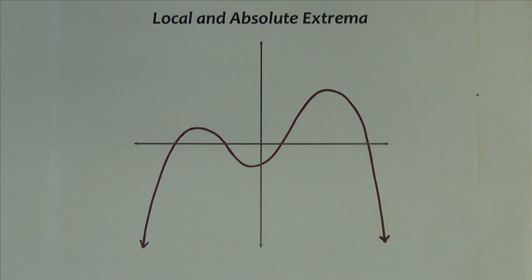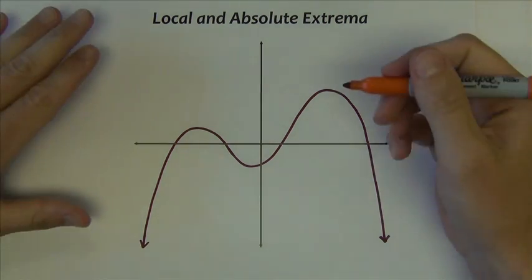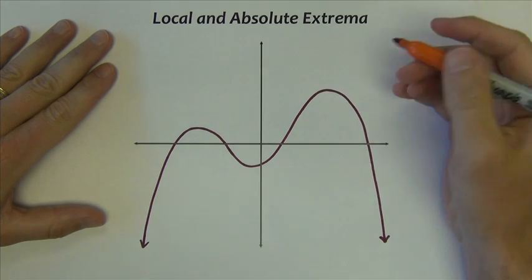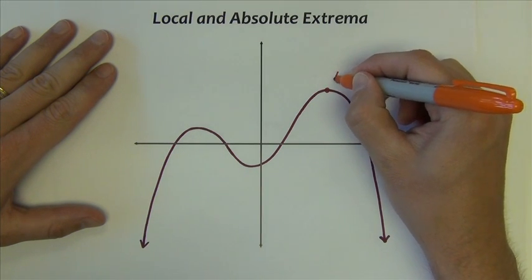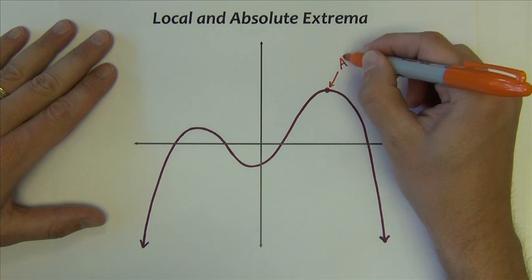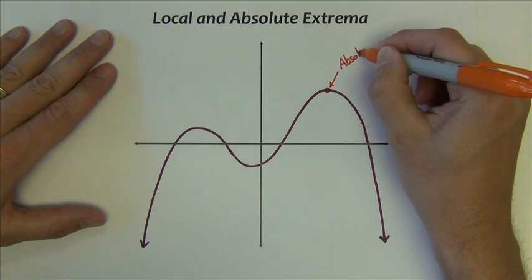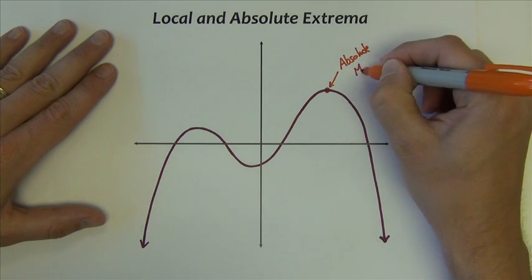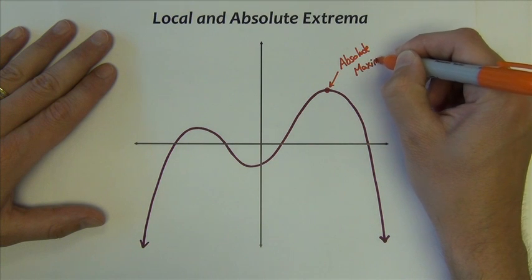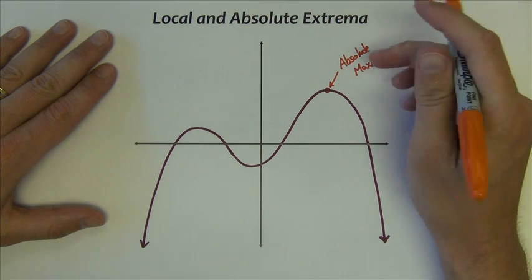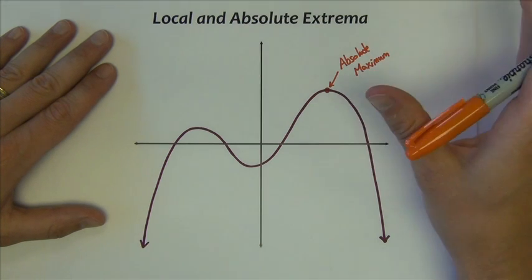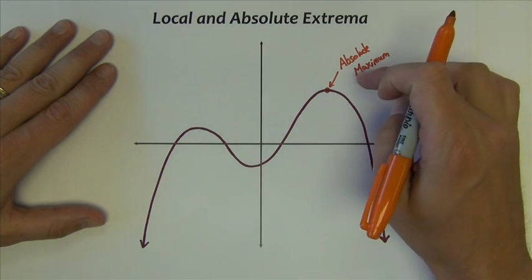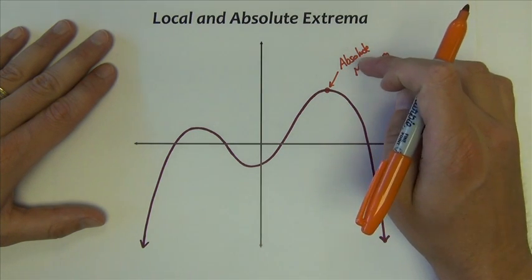If you look around this graph, maximum value would imply the highest point on the graph. Right here we have what we call an absolute maximum. Absolute because it is the highest point. Nowhere on this graph do we have a point that is higher than this one. So it's the absolute maximum.